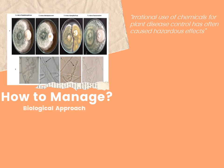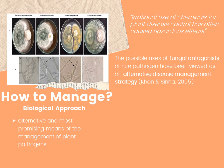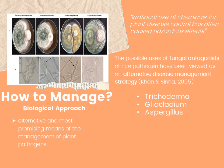Thus, the biological approach has emerged as an alternative and promising means of managing plant pathogens. The possible use of fungal antagonists of rice pathogens has been viewed as an alternative disease management strategy. Among several antagonists tested by various scientists, species of Trichoderma, Gliocladium, Aspergillus, and many more have been found effective in reducing sheath blight and are extensively explored for the control of soil-borne plant pathogens.